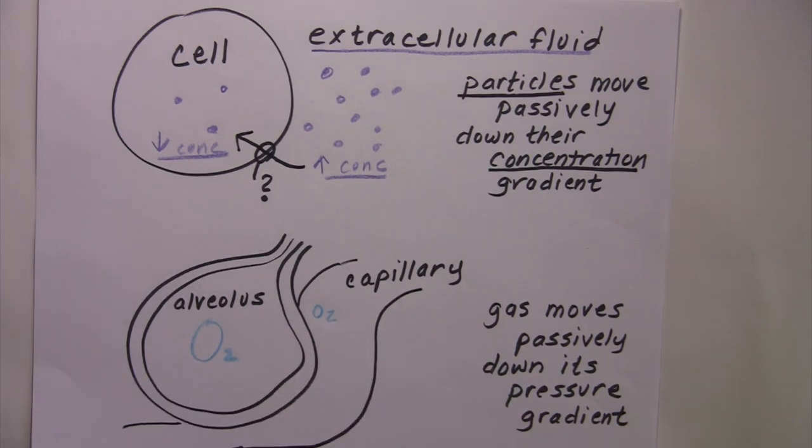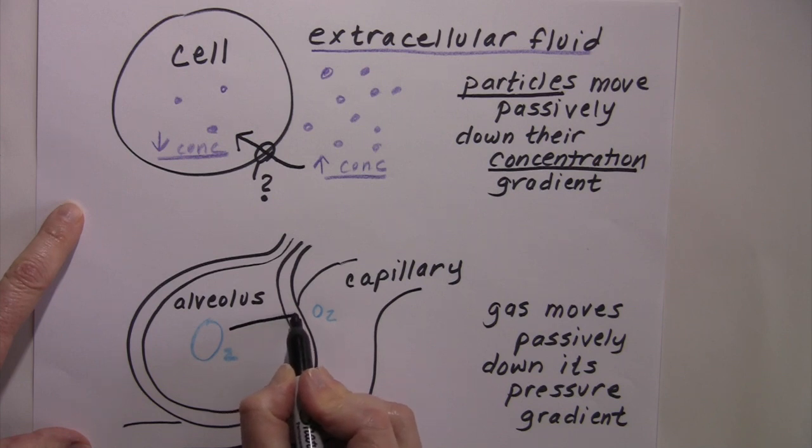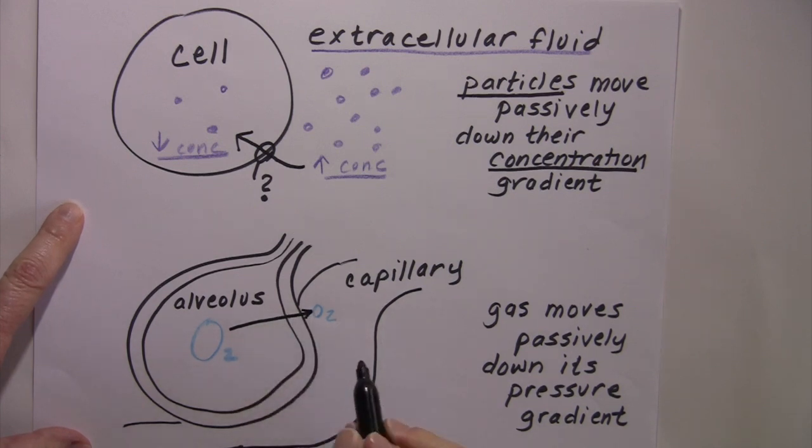According to the laws of diffusion, what will happen is oxygen will move from its area of high pressure into its area of low pressure passively.